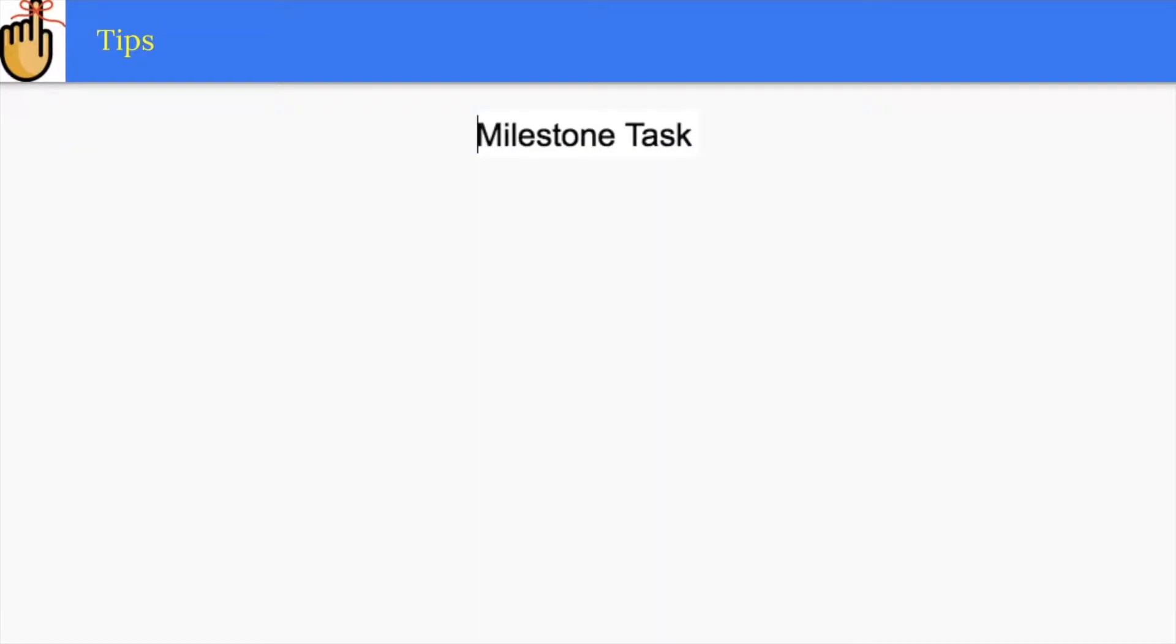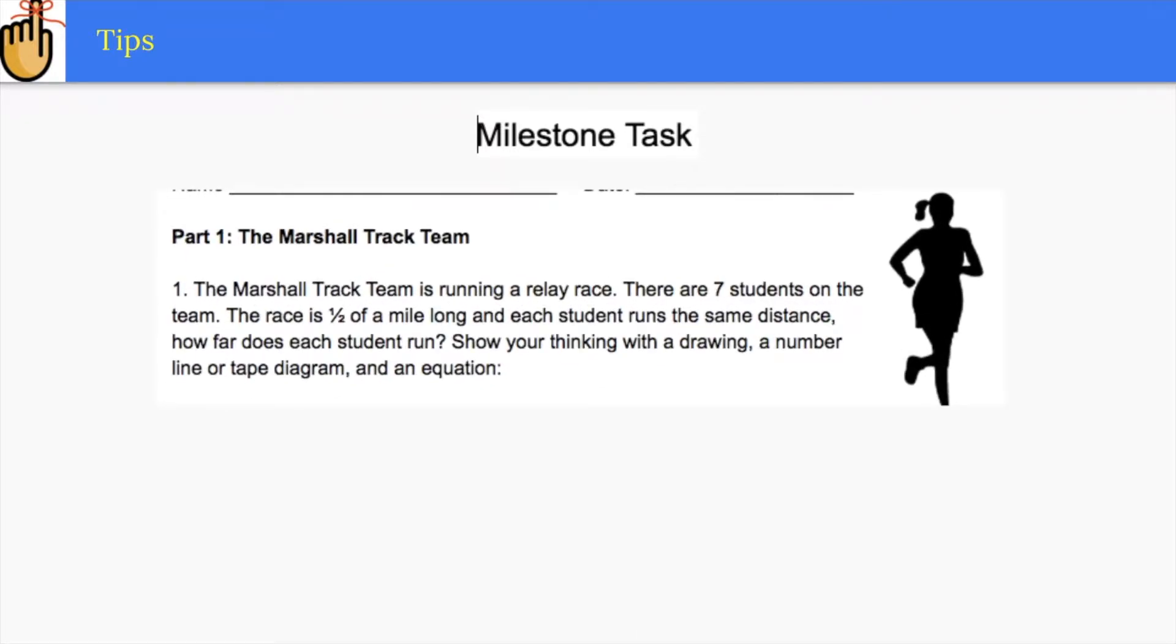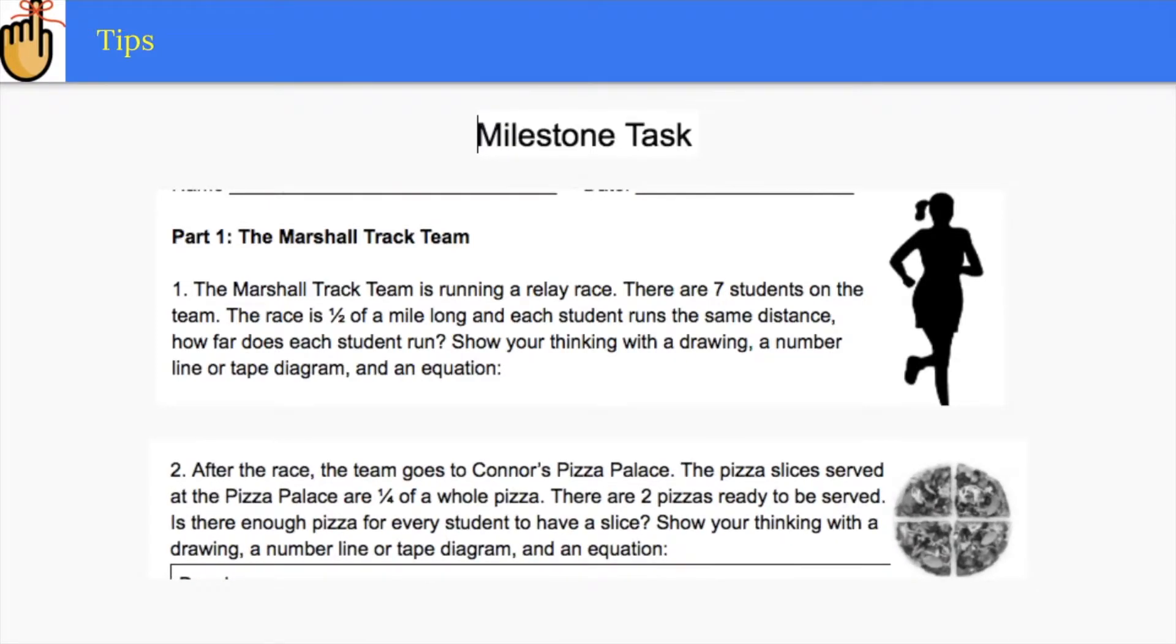When you sit down with your colleagues to preview this unit, I recommend you do the milestone task, the Marshall track team. Students solve division problems involving fractions in the context of a track team running a relay race and going to eat pizza. They use the three reads strategy to make sense of the problem and then solve by making a drawing using a visual model such as number line or tape diagram and then writing an equation to represent the situation.